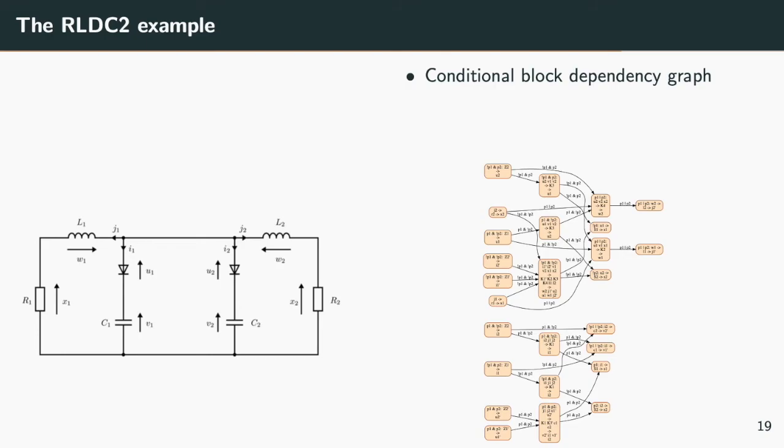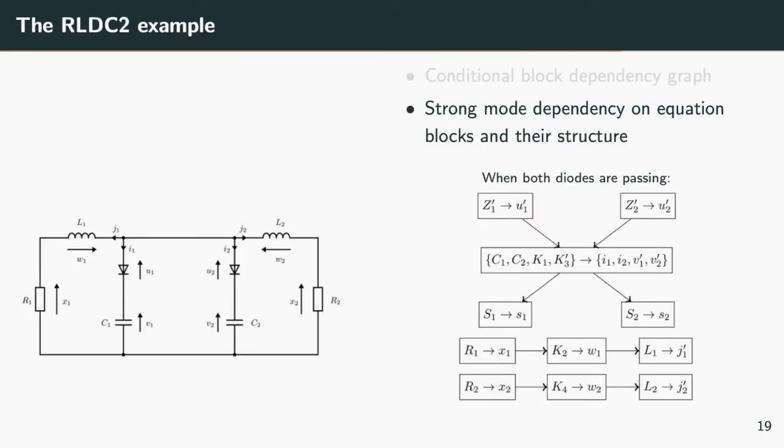When both diodes are passing, you have 11 active blocks that are ordered as shown. Remark the block of four equations and four unknowns. One of these, equation k3, is differentiated once.